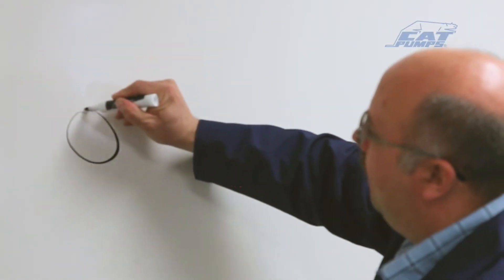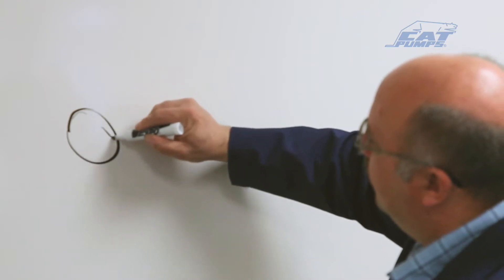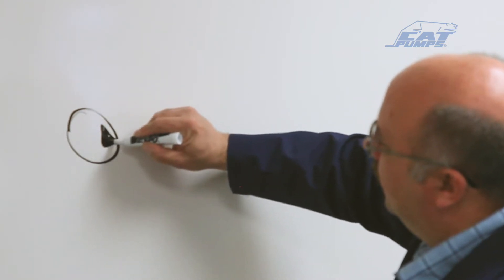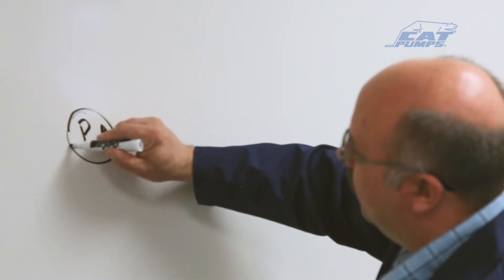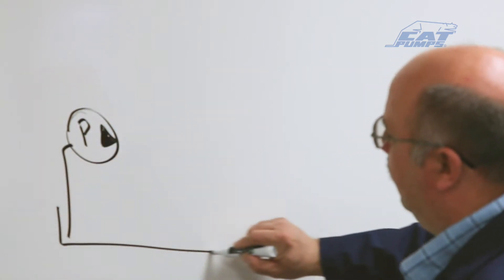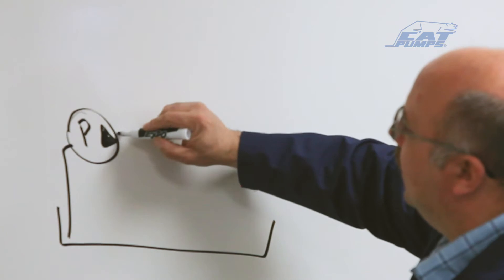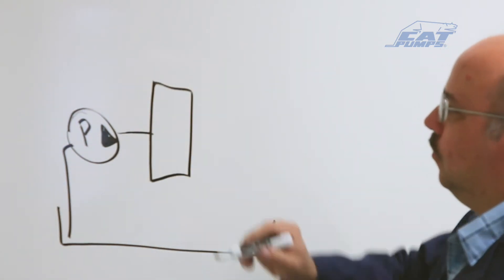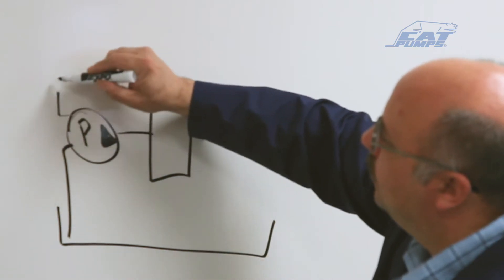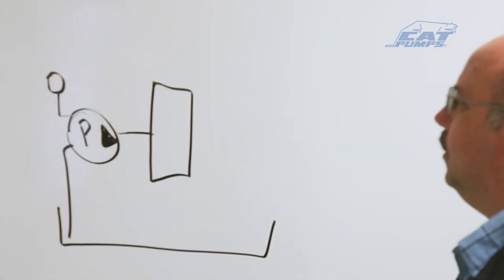Typically you'll have a high pressure water pump symbolized there. We'll put a P in there and it draws water up out of a reservoir. Then it's usually connected to a pressure regulator device. Like that, we'll just draw a square. There'll usually be a pressure gauge on it so you know what pressure you're at.